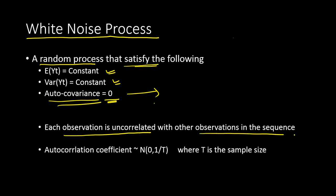Each observation is uncorrelated with other observations in the sequence — that is one of the main features of a white noise process. Why is it so important to find this out before doing modeling? If the auto-covariance is zero, meaning the observations are totally uncorrelated or independently distributed, then there is no point in doing estimation or modeling using the time series data.